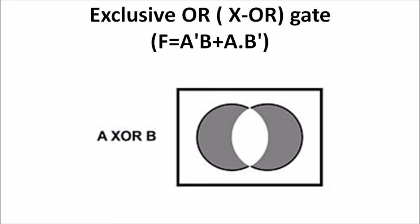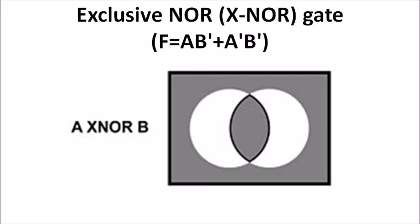Another type of gate is the Exclusive OR gate, or XOR gate. The XOR gate is an electronic circuit with two or more inputs producing only one output. Its graphical symbol is similar to the OR gate except for additional curved lines on the input side. This gate produces output one if any input is one, and output zero if both inputs are either one or both are zero.